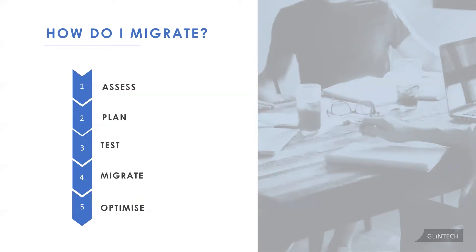These five steps are not just for migrating from on-prem to cloud. They apply if you're starting fresh in cloud, or if you're merging existing instances — many organizations have multiple Jira or Confluence instances that need to be consolidated. The steps are: assess, plan, test, migrate, and finally optimize.